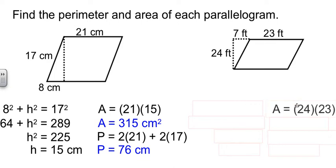So we can get our area right now. 24 times 23 is 552 square feet.